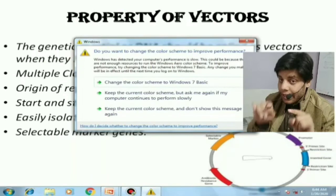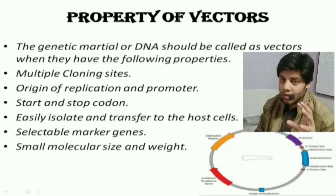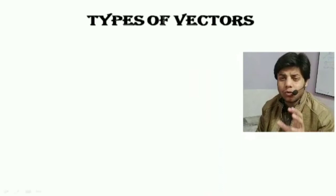اس cell کو آپ select کر سکتے ہیں — اسی لیے اسے selectable marker کہتے ہیں۔ اس کے علاوہ vector کا size چھوٹا ہونا چاہیے۔ یہ vector کی کچھ properties ہیں جو اگر ایک DNA molecule میں موجود ہوں تو اس کو vector کہا جا سکتا ہے۔